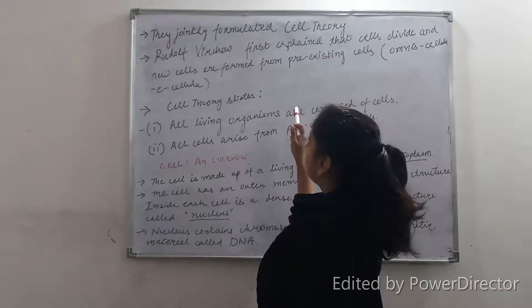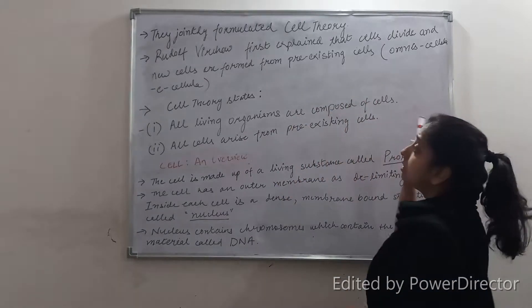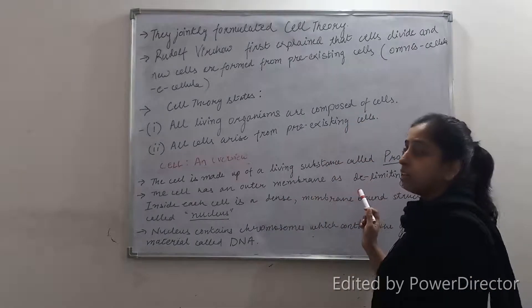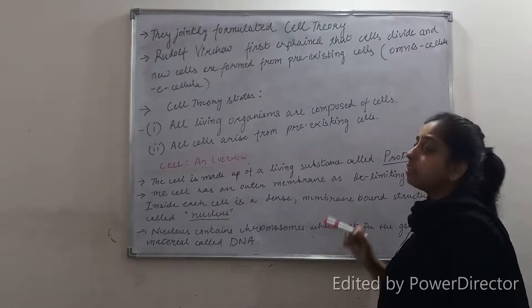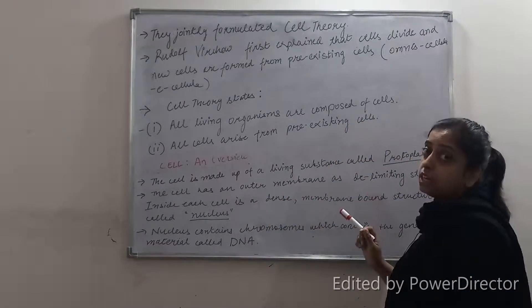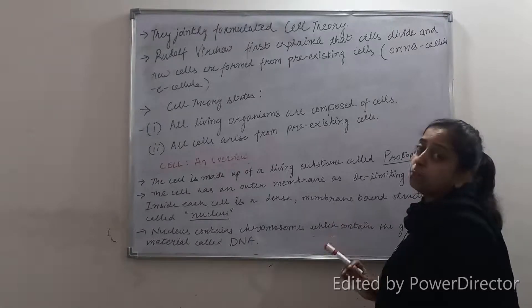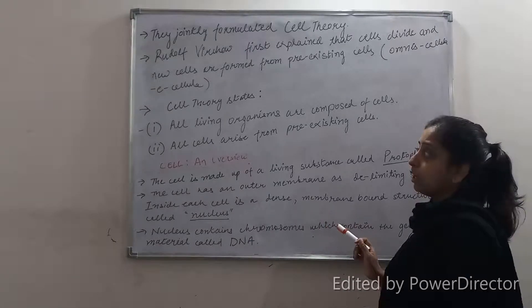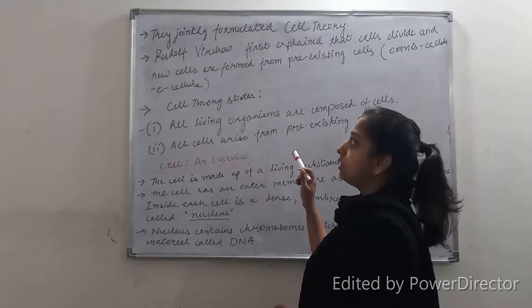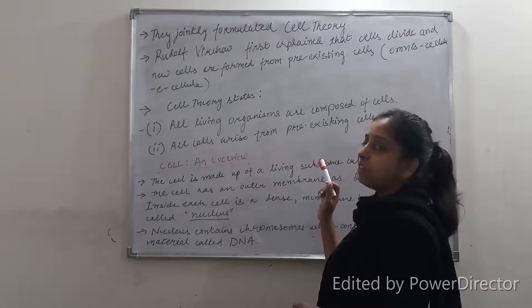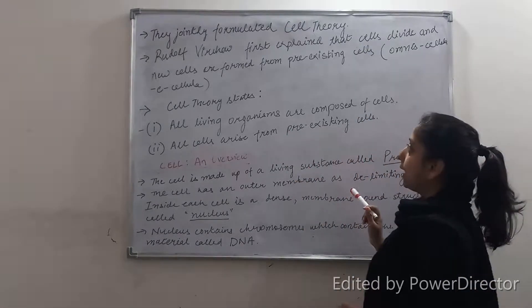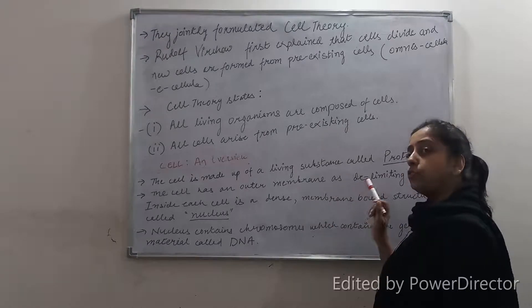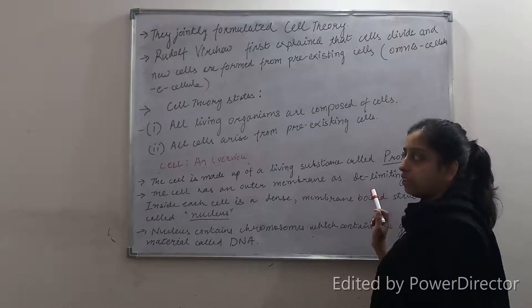Rudolf Virchow first explained that cells divide and new cells are formed from pre-existing cells — that is, he explained the process of cell division, which could not be explained by Schleiden and Schwann. Now, the modern cell theory states that all living organisms are composed of cells and all cells arise from pre-existing cells.